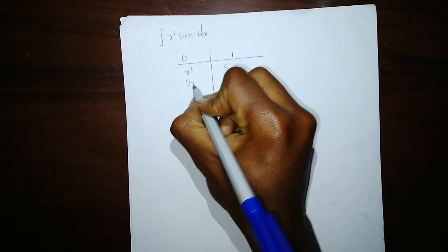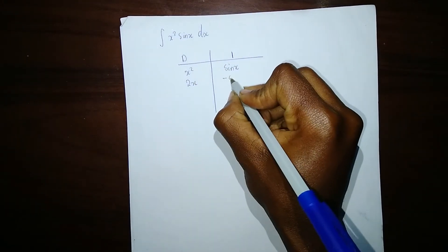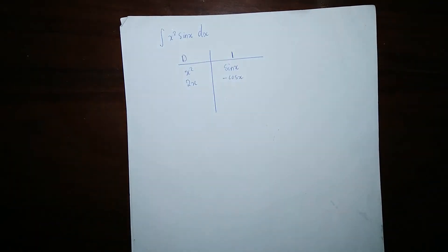You get 2x. We integrate sin(x), you get negative cos(x).